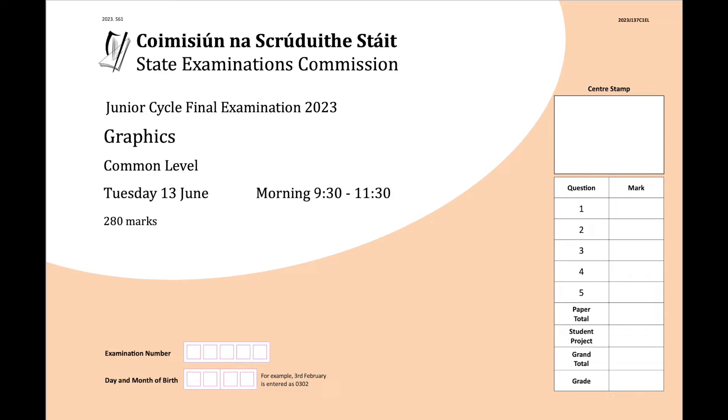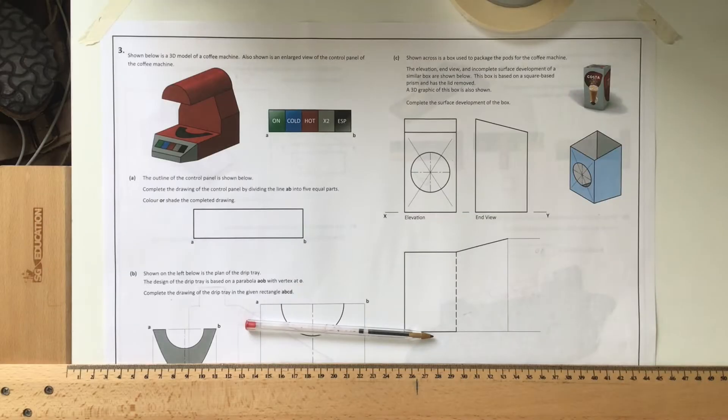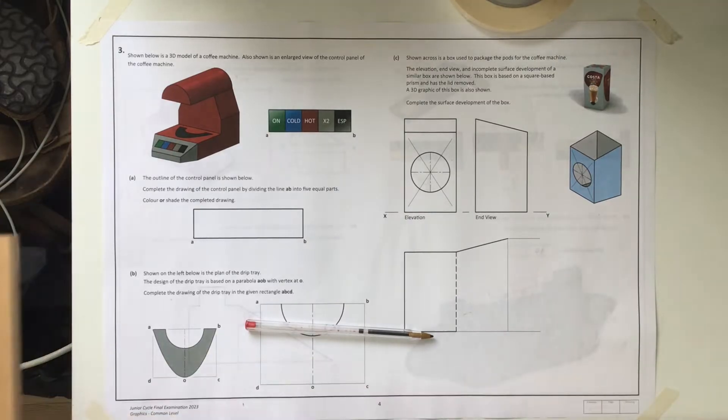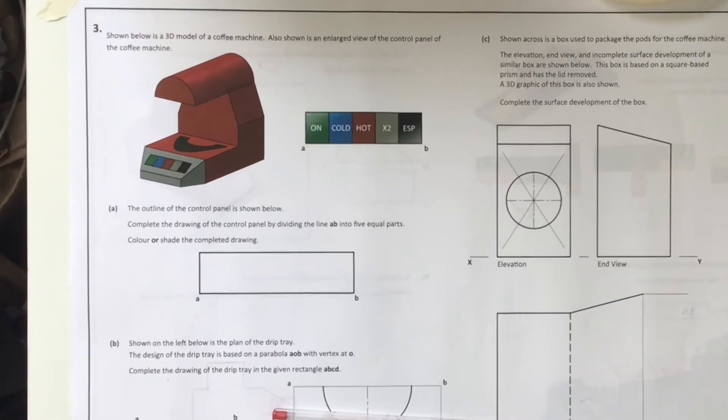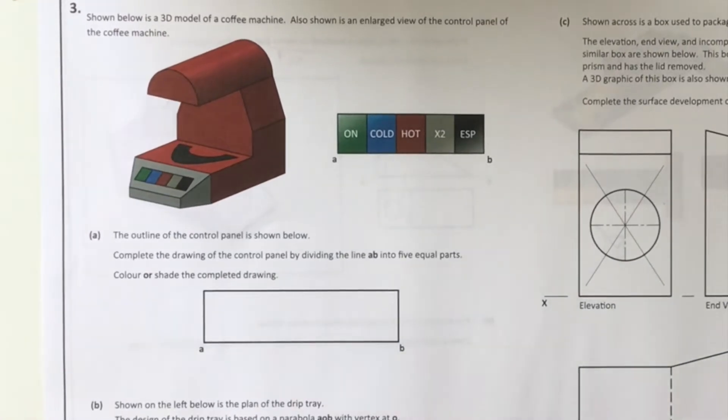Hi guys, back with another Junior Cycle 2023 exam question. We've moved on now to question 3. So question 3A is a simple division of a line question. Anyone doing Junior Cycle graphics should know how to do this at this stage.